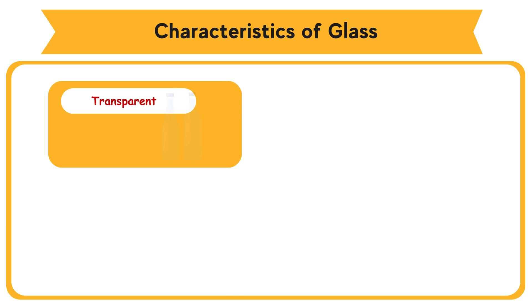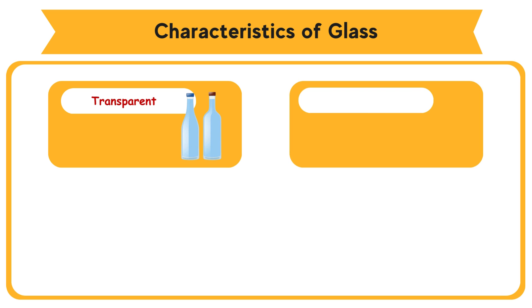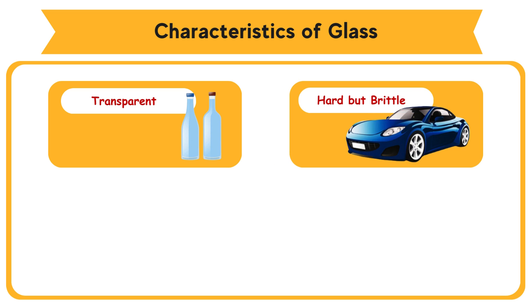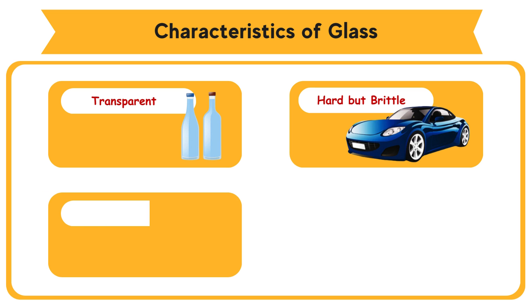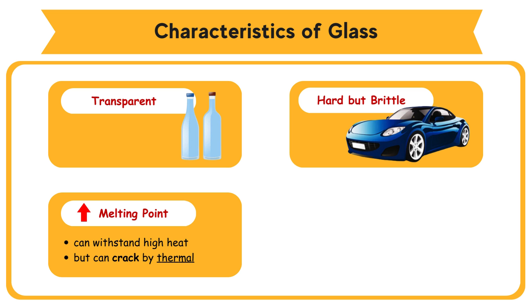Transparent: Packing beverage in a glass bottle enables the consumer to see the content easily. Hard but brittle: Automobile windshields are made of glass. Windshields are hard, but easily crack if hit by a stone. Has high melting point, but high thermal expansion coefficient. Glass can withstand high heat, but can crack by thermal shock.